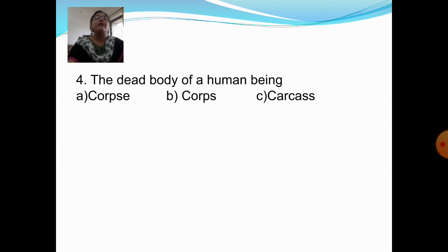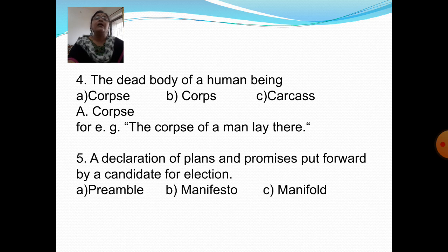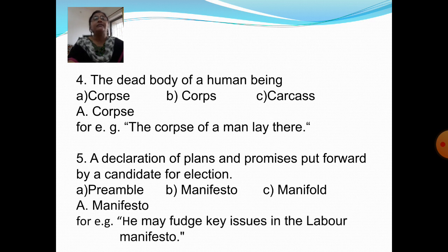Next question: The dead body of a human being. Option A: Corpse. Option B: Corpse. Option C: Carcass. Answer is Option A: Corpse. For example, the corpse of a man lay there. Next question: A declaration of plans and promises put forward by a candidate for election. Option A: Preamble. Option B: Manifesto. Option C: Manifold. Answer is Option B: Manifesto. For example, he may fudge key issues in the labor manifesto.